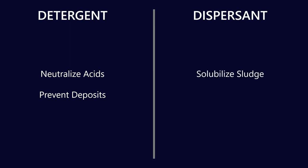Dispersants have a slightly different objective. One of the things that they do is they solubilize sludge and other sludge precursors and they also prevent particle agglomeration which is what I just talked about.